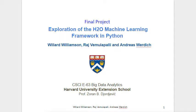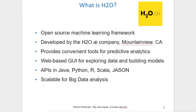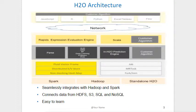In this short video, I will describe the H2O machine learning framework in Python. H2O is an open source platform that provides convenient tools for predictive analytics. It comes with a web-based graphical user interface for exploring data and building models, but there are also APIs in the most common languages available. It is scalable for big data analytics because it integrates with Hadoop and Spark and connects to the most common databases.